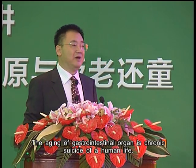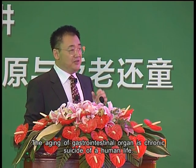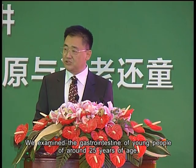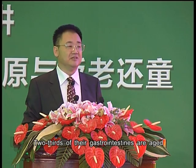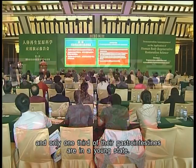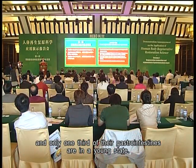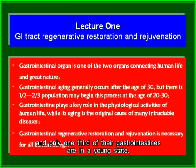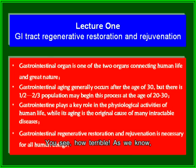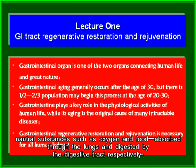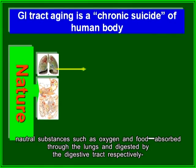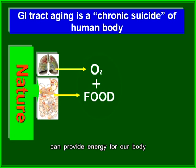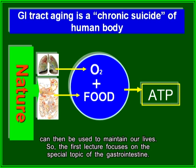The aging of gastrointestinal organs is like a chronic suicide of human life. When we examine the gastrointestine of young people around 25 years of age, two-thirds of their gastrointestines are already aged, and only one-third are in a young state. Natural substances such as oxygen and food, absorbed through the lungs and digested by the digestive tract, provide energy to maintain our lives.